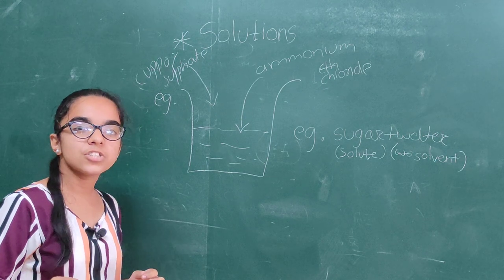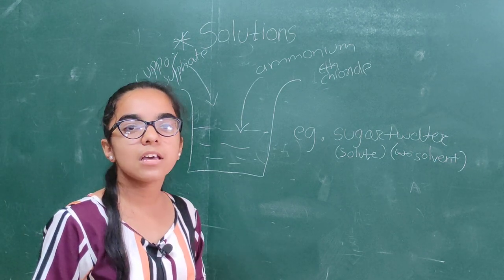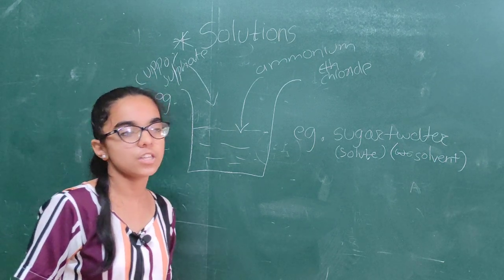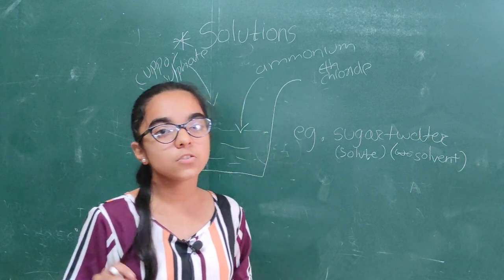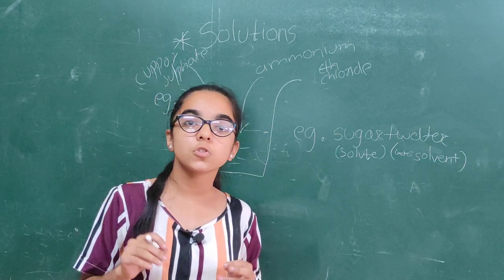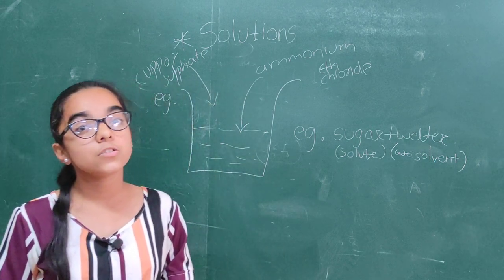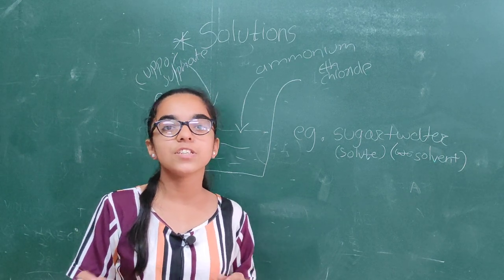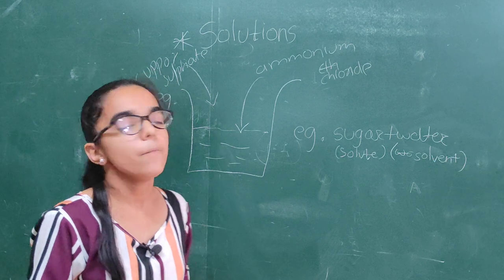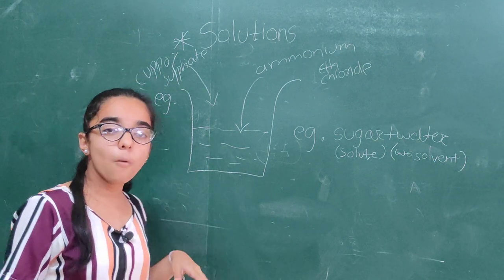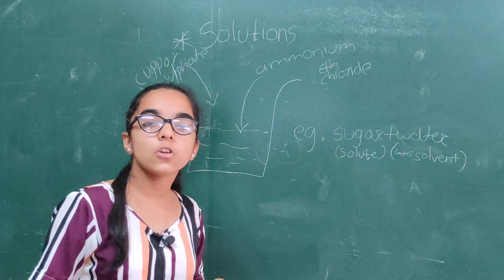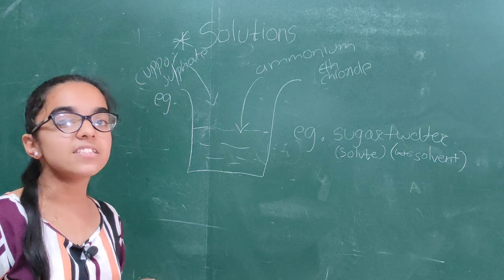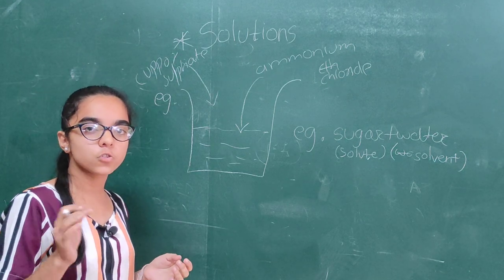On the basis of concentration, solutions are classified into three types: supersaturated solution, saturated solution, and unsaturated solution. A saturated solution is one in which no more solute can be dissolved. An unsaturated solution is one in which more solute can be dissolved. A supersaturated solution is one in which the amount of solute is greater than the solvent. Another important topic is solubility — the amount in grams of solute in 100 grams of water in a saturated solution is known as the solubility of a solute.